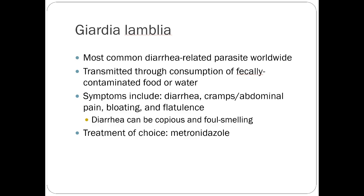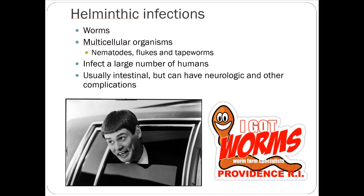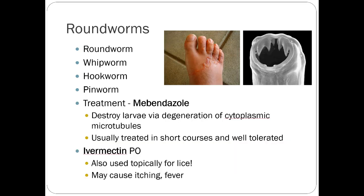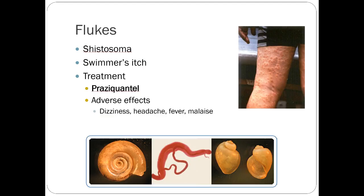Parasitic infections — I'll blow through this quickly as it's not really going to be heavily tested. Giardia lamblia is the most common diarrhea-related parasite worldwide, transmitted via fecal-oral contamination through food or water. Treatment of choice is metronidazole. Helminthic infections — worms of various sorts — are not super common in the United States but infect a large number of humans worldwide. Mebendazole and ivermectin are two treatment options.